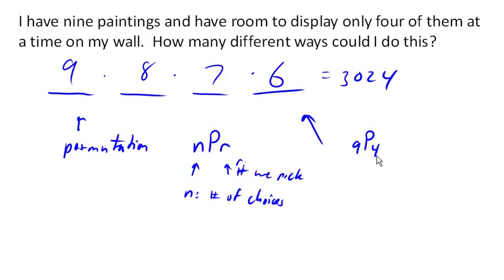Now, there are several ways to calculate a permutation. One is the way we just did it, which is to multiply 9 times 8 times 7 times 6. Another way is to use factorials. You'll notice that this looks a lot like 9 factorial, which is 9 times 8 times 7 times 6 times 5 times 4 times 3 times 2 times 1.